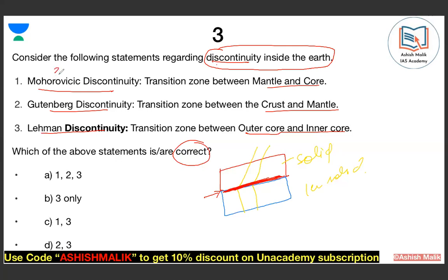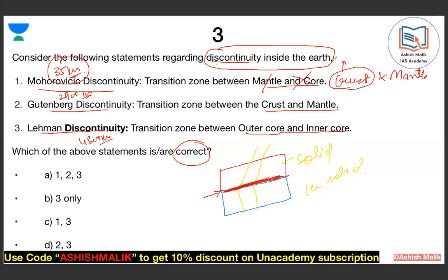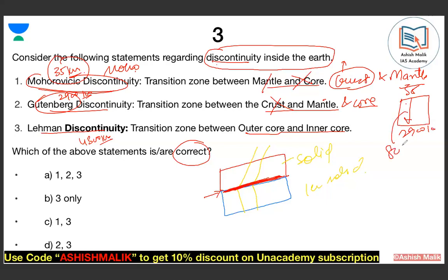The Mohorovicic discontinuity is at 35 km depth — this is between the crust and the mantle. The Gutenberg discontinuity is at 2,900 km depth — between the mantle and the core. There is also a discontinuity at 4,300 km depth. The transition from 35 km is not between mantle and core — it is between the crust and mantle. So the first two options have errors — they are interchanged. The third option, Lehmann discontinuity, is correct. The answer is B.